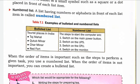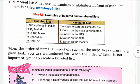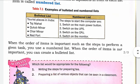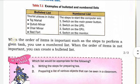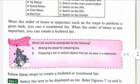Number list या bullet list कब use करेंगे? जब items का order important हो — जैसे किसी task को perform करने के steps — तो उसके लिए number list use की जाती है। लेकिन जब items का order important नहीं है, तब हम bullet list use करते हैं। जैसे कि first way, second way — अगर order important नहीं है तो उसमें bullet list लगाते हैं।